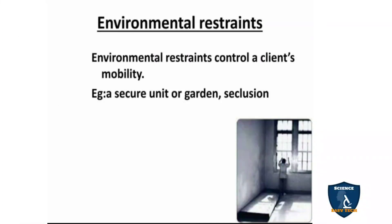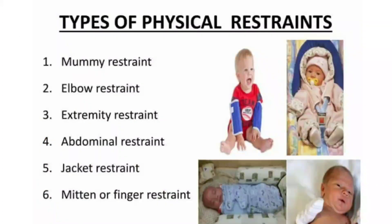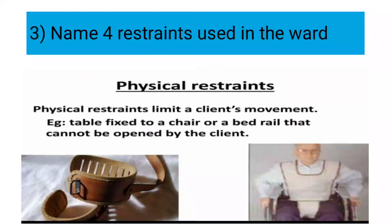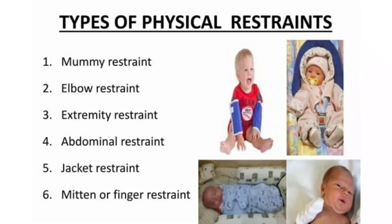Environmental restraints control a client's mobility — for example, a secured unit or seclusion room where patients with suicidal ideations are kept in a separate cell. For this question, you can answer any four from: mummy restraint, elbow restraint, extremity restraint, abdominal restraint, jacket restraint, or mitten or finger restraint.